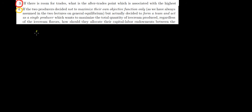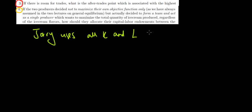So for question four, we can say that Jerry uses all capital and labor and produces a quantity of 17 units, and we are done.